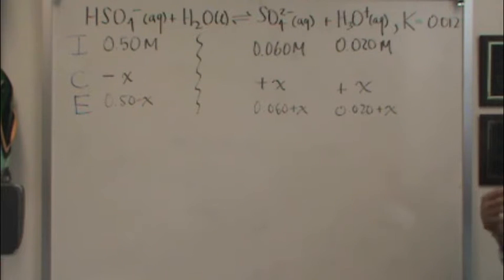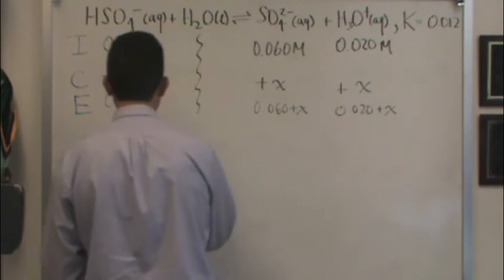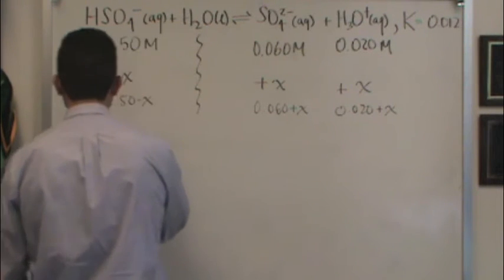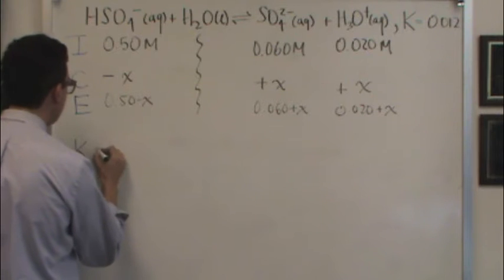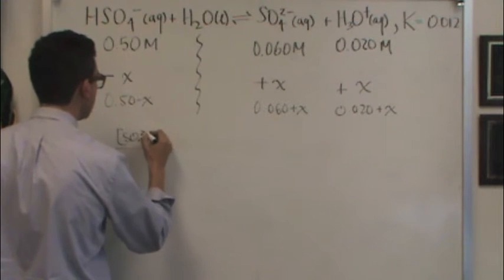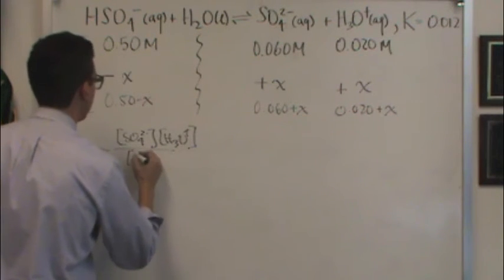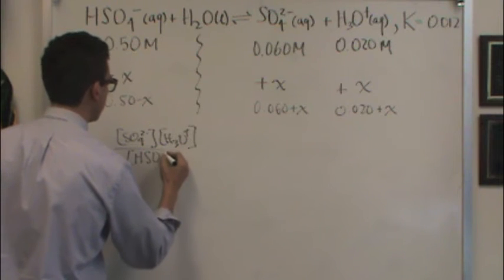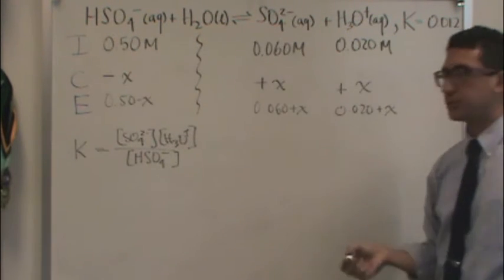The second thing that I always go to is the equilibrium expression. So let's write that down. It looks really similar to Q. And I'm going to write it way over here on the left-hand side. So K is going to equal products, that's the sulfate and the H3O plus, all divided by the bisulfate concentration.